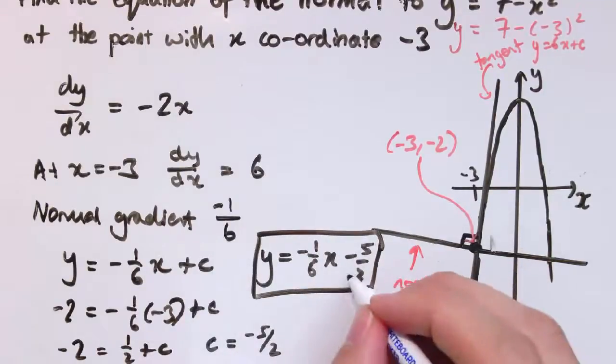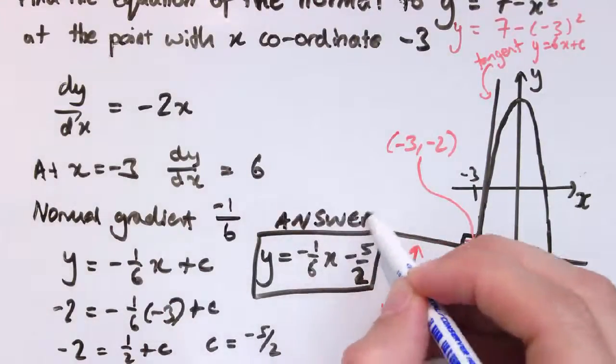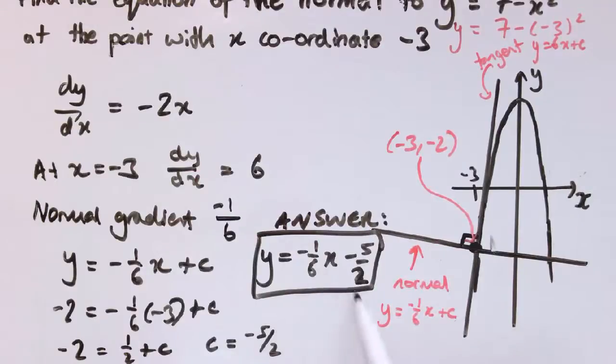Of course, if I was doing this on paper, I would continue working down the page, but here is my answer: y equals minus 1 sixth x minus 5 over 2. You might tidy this up a bit by multiplying it all through by 6. So you get 6y equals minus x minus 15. If you don't want fractions in there, that's just as good an answer as well.